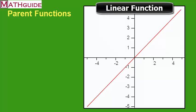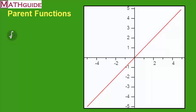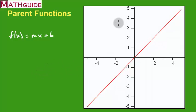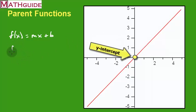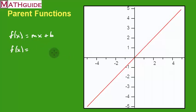For our next function, this is called a linear function. Many students in algebra are very familiar with this one because it could be described as y equals mx plus b. In function notation, we use f of x. It's mx plus b, where b is the y-intercept and m is the slope. We could change the slope, we could change where it crosses the y-axis, which is called the y-intercept. On this particular linear function, it looks like we have y equals x.